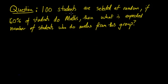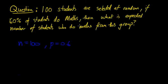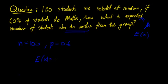Question: 100 students are selected at random. If 60% of students do math, then what is the expected number of students who do math from this group? We can count doing math as a success. The expected number is the mean, which is E(X).